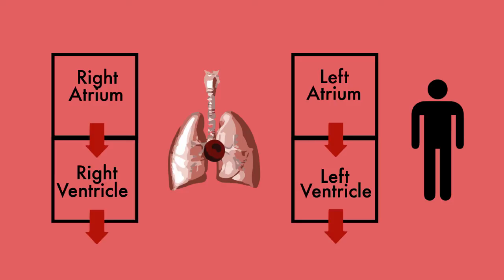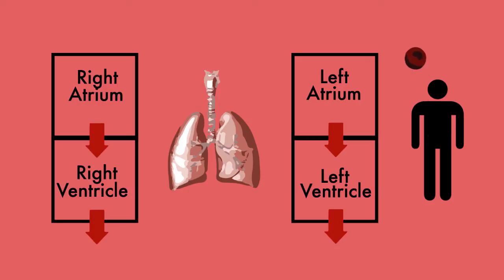Blood from the lungs returns back to the heart and to the left atrium. The left atrium pumps blood into the left ventricle, and from the left ventricle the heart pumps blood to the other organs and to the rest of the body. From here, blood will return back to the right atrium and will continue in this circle again.